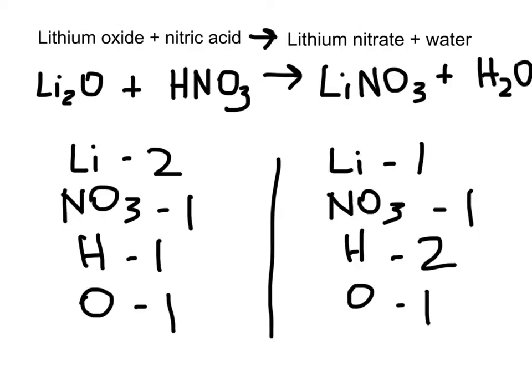Now this is slightly trickier — we have two lithiums on the left but only one on the right, and hydrogen isn't balanced either. My suggestion is to always start with the metals and non-metal groups first, because hydrogen and oxygen tend to be found in multiple places, making them harder to balance. Metals and non-metal groups are only found in one place, so there is only one spot where you can balance them.